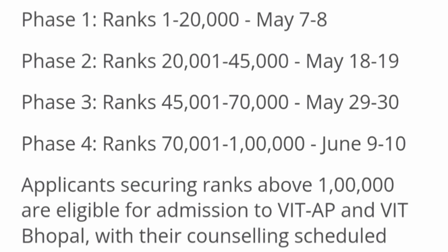Phase one is for students with ranks between 1 and 20,000. They will be called to participate in seat allocation on May 7th and 8th, and the result will be declared for the first round of seat allotment. Phase two is for students with ranks between 20,000 and 45,000, and their seat allocation will happen on May 18th and 19th.